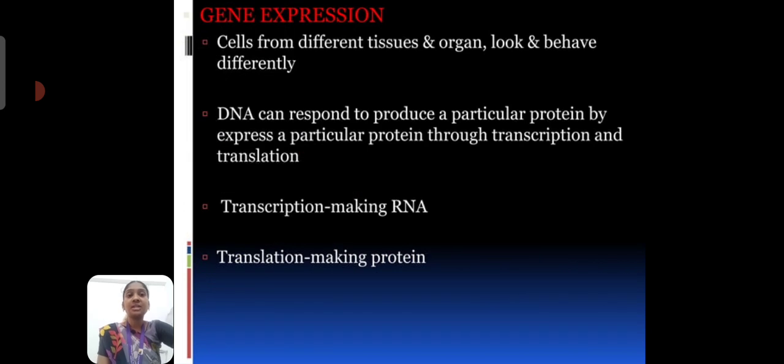The gene expression. The cells from different tissue or organ look or behave differently. The DNA can perform the transcription or translation function. The DNA can produce the particular protein by expression of particular protein through the transcription and translation process. The first one is transcription. The transcription process, RNA molecule converted from DNA. Thank you very much.